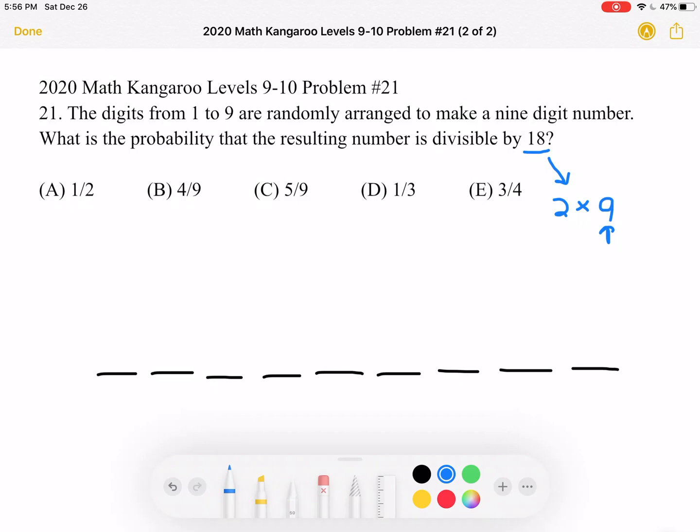So in this case, we have the digits from 1 to 9. So we have 1 plus 2, plus 3, plus 4, plus 5, plus 6, plus 7, plus 8, plus 9, which is a sum of 45.